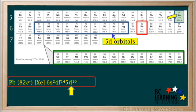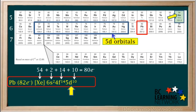And they hold a total of 10 electrons, so we show this by writing 5d¹⁰ here. Adding the 5d¹⁰ brings us to a total of 80 electrons.